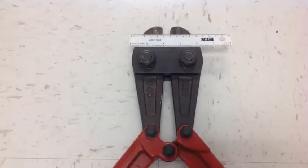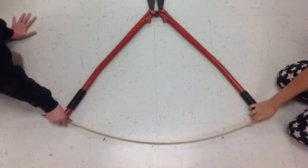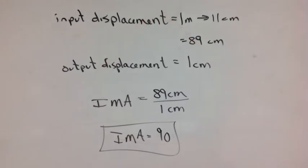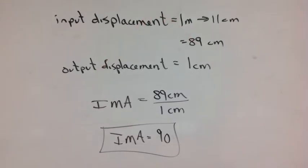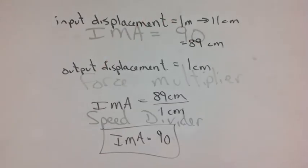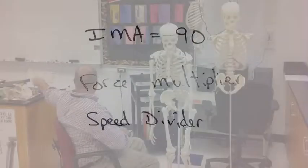For the bigger bolt cutters, we will also use an output displacement of 1 cm and use the same method to measure the input displacement. That leaves us with about 90 cm input and 1 cm output, so the ideal mechanical advantage is 90 — an even bigger force multiplier and a bigger speed divider.